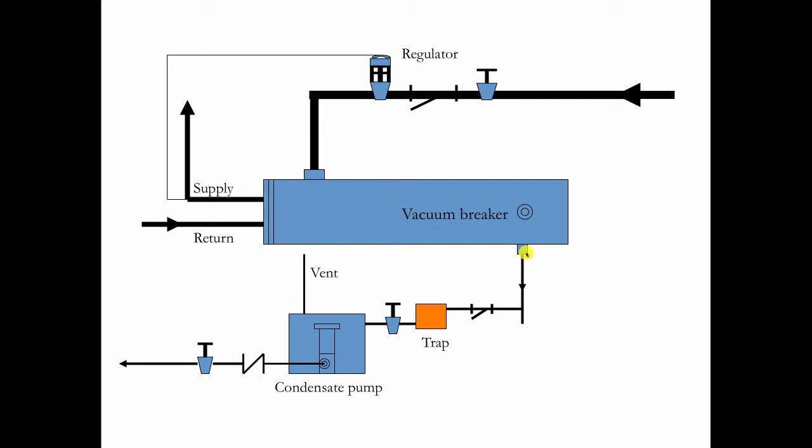Remember, we have no more steam pressure at that point. It's just atmospheric pressure inside the shell allowed in by the vacuum breaker. So we want to get this trap as low as we possibly can below it.